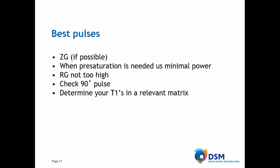So to conclude: use a simple pulse program; if possible, use a ZG. If pre-saturation is needed, use minimal power as needed — not to make it more cosmetically beautiful, but just for the bare necessities. Also check that your receiver gain is not too high, as that will give a lot of additional interference in your signals and makes quantification more difficult when you're doing the integration. Check your 90 degree pulse and also determine your T1s in a relevant matrix — this can change as well.